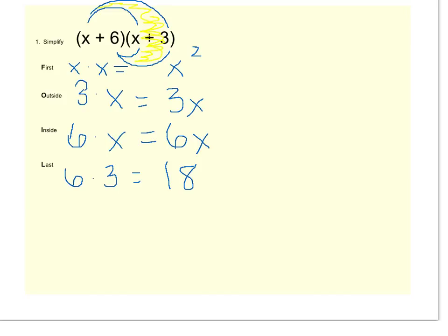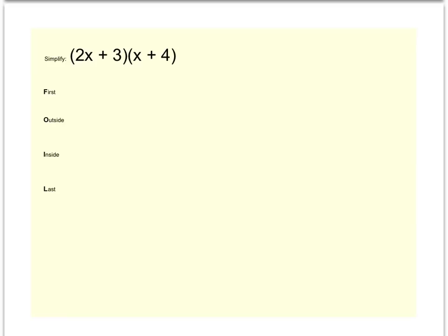Then you finish this up by combining like terms. I have like terms with my middle guys, the 3x and the 6x. So that will become 9x. So we'll have x squared plus 9x plus 18. That would be my answer for multiplying those two binomials. Let's try another example.